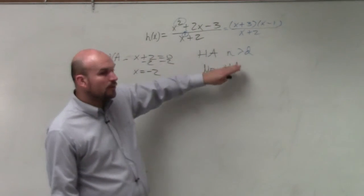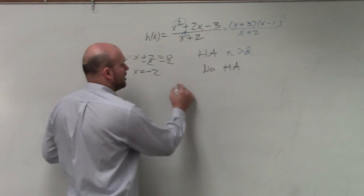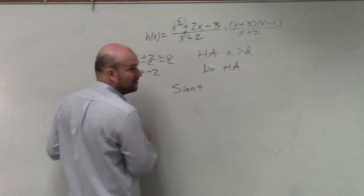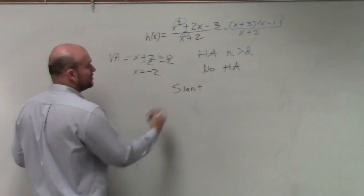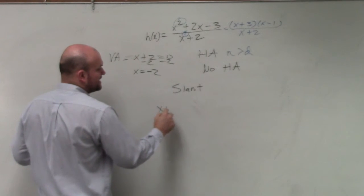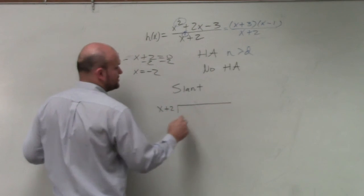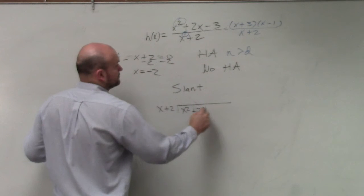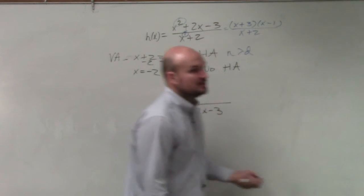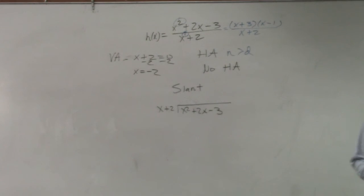So when there's no horizontal asymptote, we want to check for our slant asymptote. All we simply need to do to identify our slant asymptote is use long division. So now, I'm just going to use long division. My quotient, I'm going to set equal to y, and that's my slant asymptote.